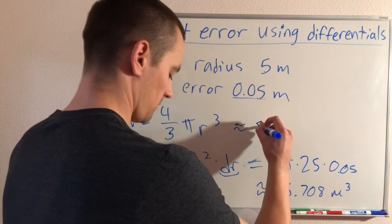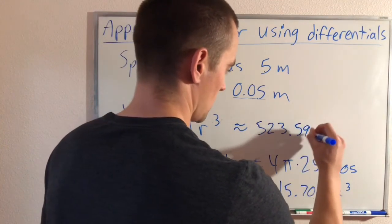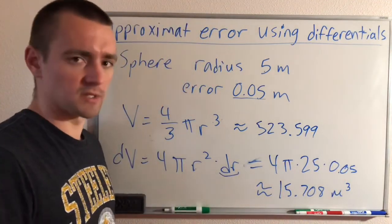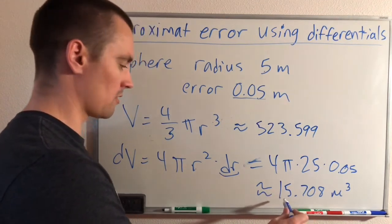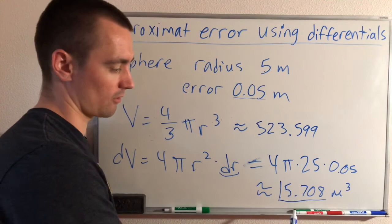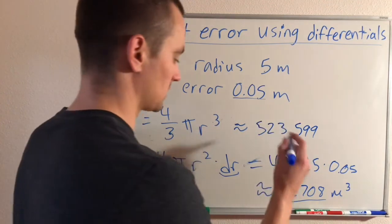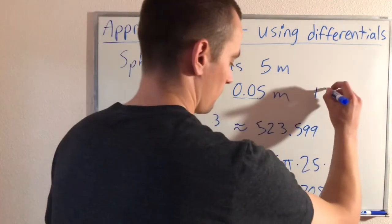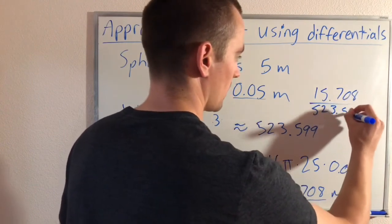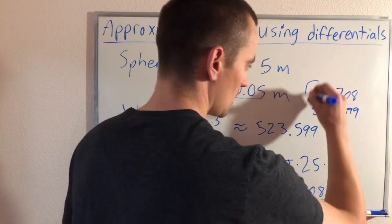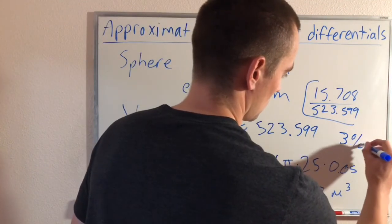Now to find our percentage error, we can just take the maximum error of our volume and divide it by our volume, and that'll give us the percentage error. Basically, if we take 15.708 over 523.599, doing this gives us about three percent.